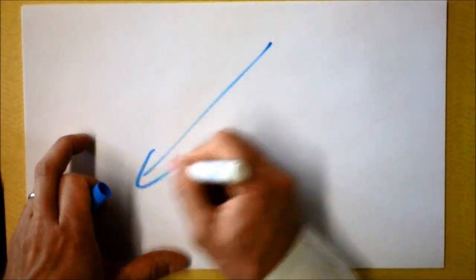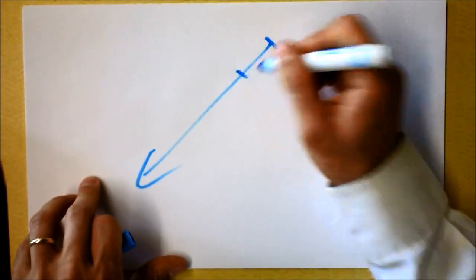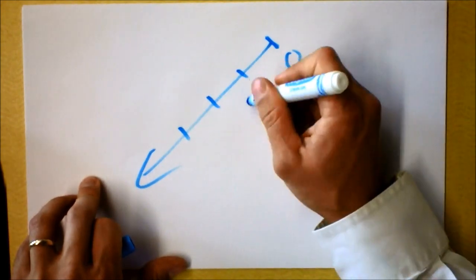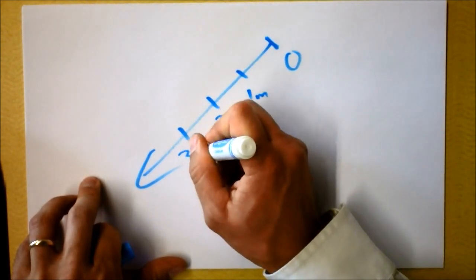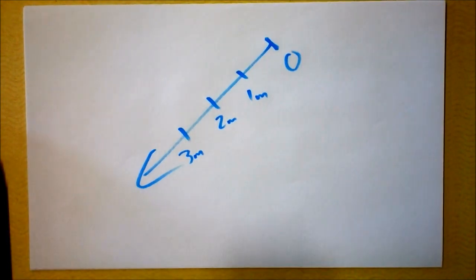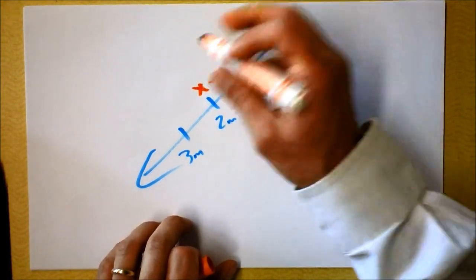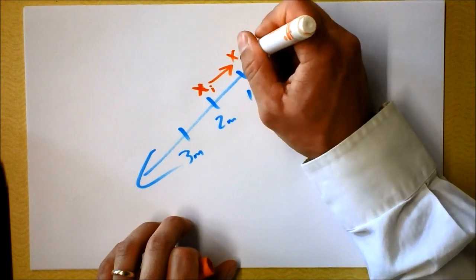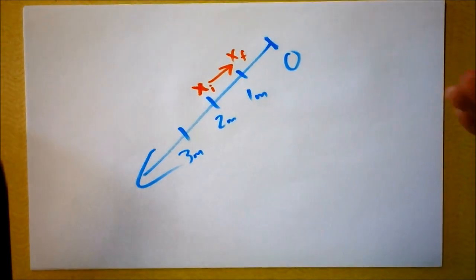We don't have to have this number line pointing that direction. We could go blue and say that is the positive direction, and that's the origin. This could be one meter, two meter, three meter. And which way would you go to get a negative displacement? You could start right here and end up right there. This could be xi, that could be xf, and the displacement would be negative one meter. You get to set it up.